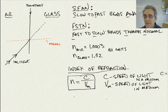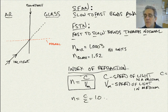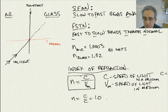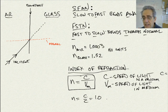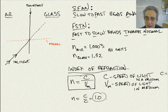If the medium is a vacuum, then n is just C divided by C, which equals 1.0. As the velocity of light in the medium gets smaller or slower, the quotient becomes bigger. So slower media have larger indices of refraction.